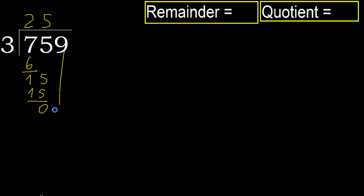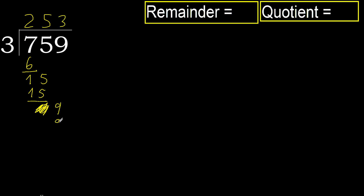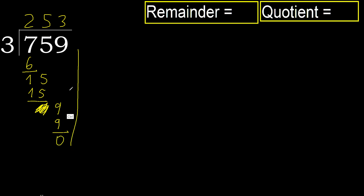Next. Eliminate 0, bring down 9. 3 multiplied by 4 is 12, which is greater. Multiply by 3: 3 multiplied by 3 is 9, which is not greater. Subtract.